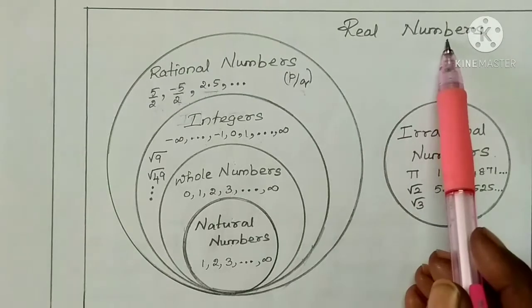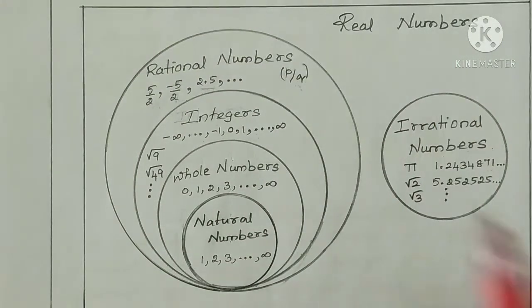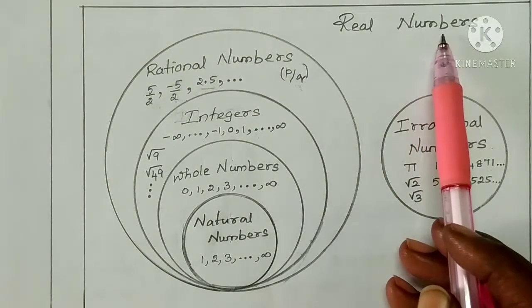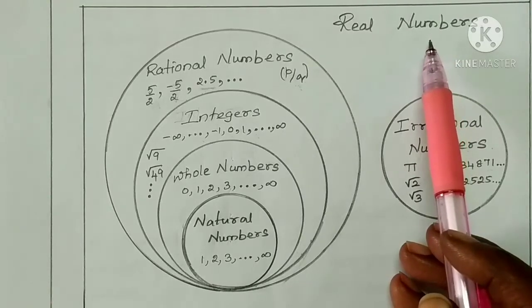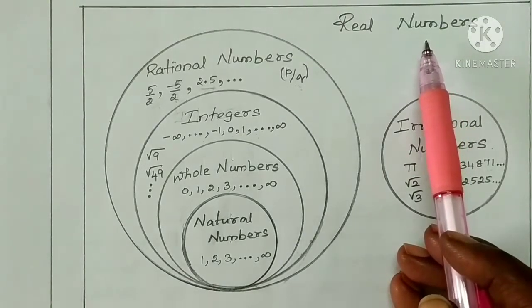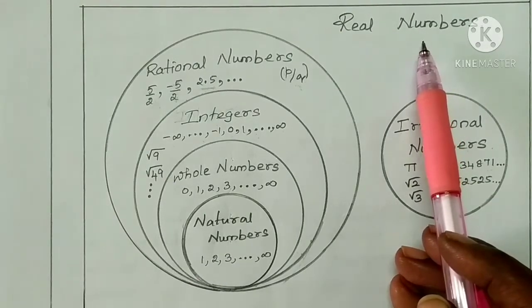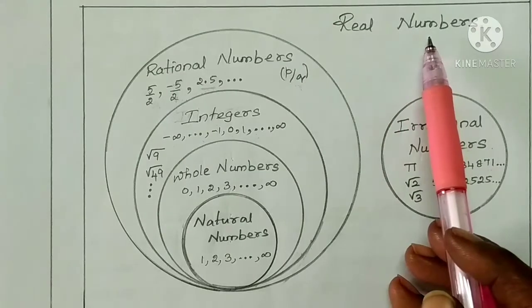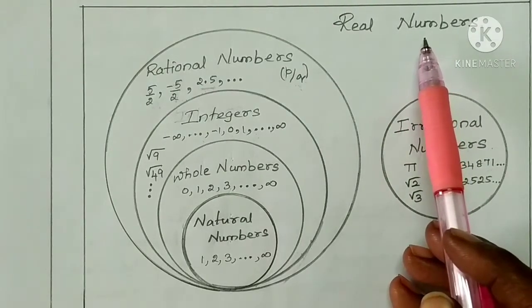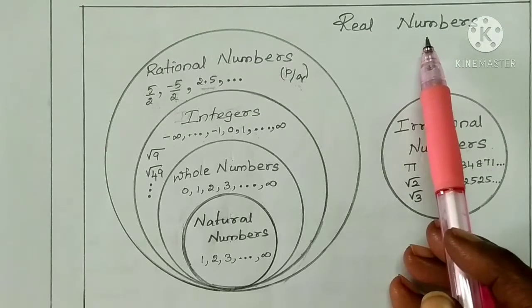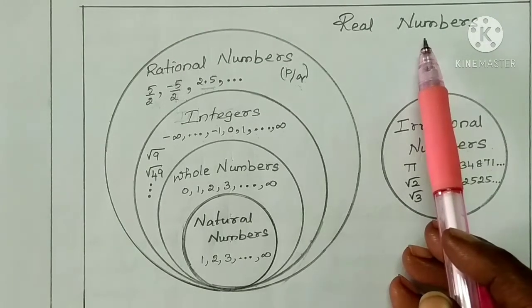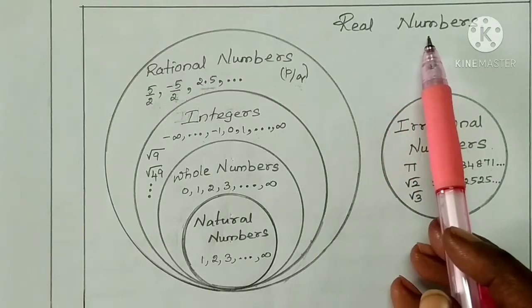Let's say the real numbers. Students, if you want to learn real numbers, you have to learn natural numbers, whole numbers, integers, and rational numbers. And the irrational numbers is a set. Together, this is the real number. The imaginary number is a separate set — that is another number set.